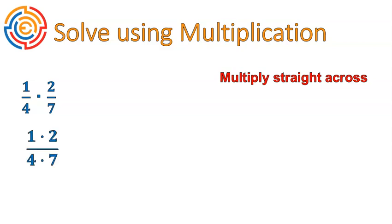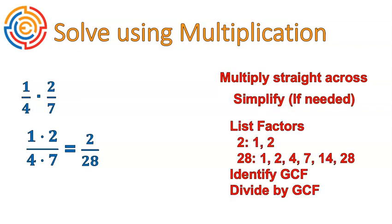Multiply straight across. I'm going to write it out like this for this step. And then multiply. 1 times 2 is 2. 4 times 7 is 28. I will simplify by listing my factors, identifying that 2 is my greatest common factor. I'm going to divide the numerator and denominator by 2. And that leaves me with my fraction in lowest terms of 1 over 14. I went over that really quick because I asked you to do it. So this should just be checking your work.